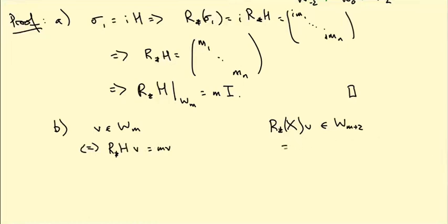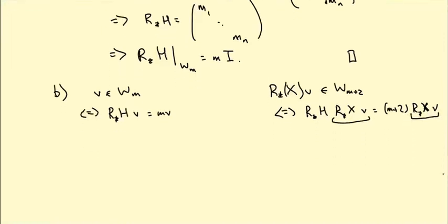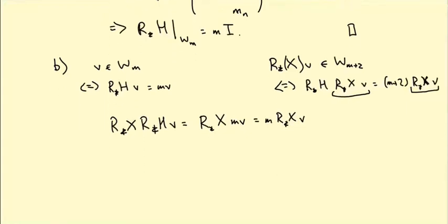And what we want to prove is that r_star H of this vector r_star X v is in the weight space with weight M+2. So equals (M+2) r_star X v. In other words, we want to show r_star X v is an eigenvector of r_star H with eigenvalue M+2. Well, unfortunately we can't evaluate r_star H r_star X very easily. What we could evaluate would be r_star X of r_star H v. And we could just bring the M out the front and this would be M times r_star X v. Okay, but we can't just send the H past the X because these two guys don't commute.